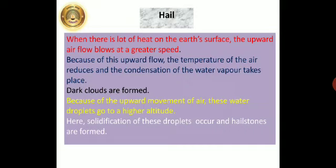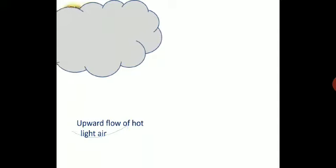Let us understand this with the help of this diagram. As there is a lot of heat, when the heat increases on the earth's surface, the air becomes light and it flows upward. Due to this upward movement of air...